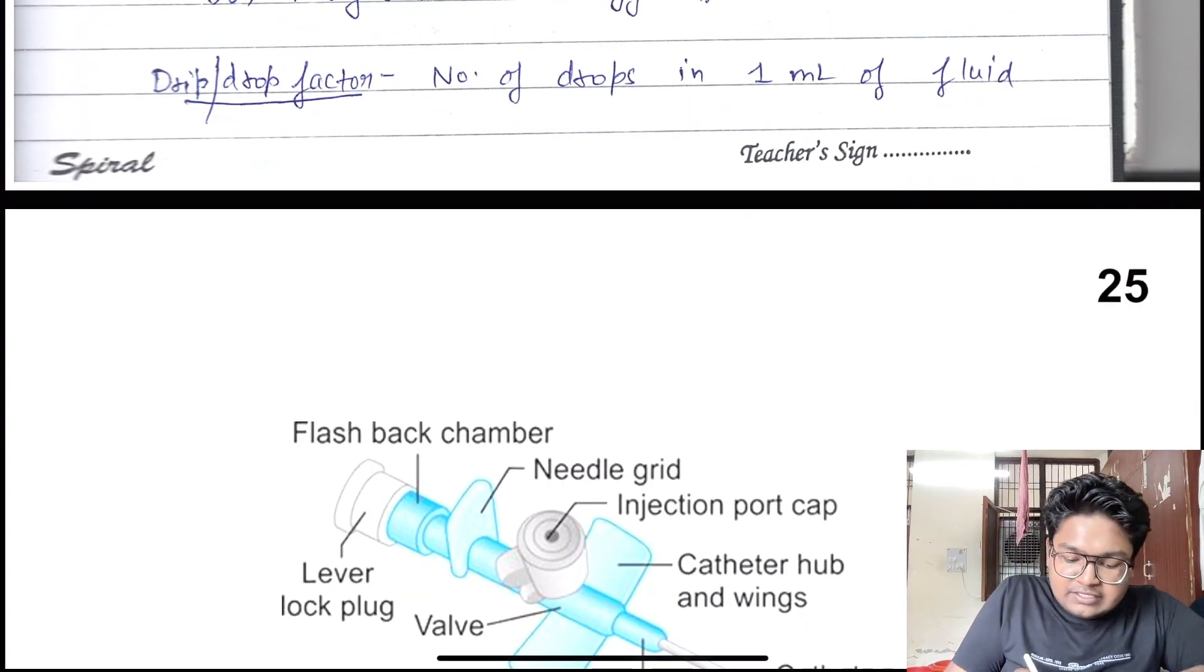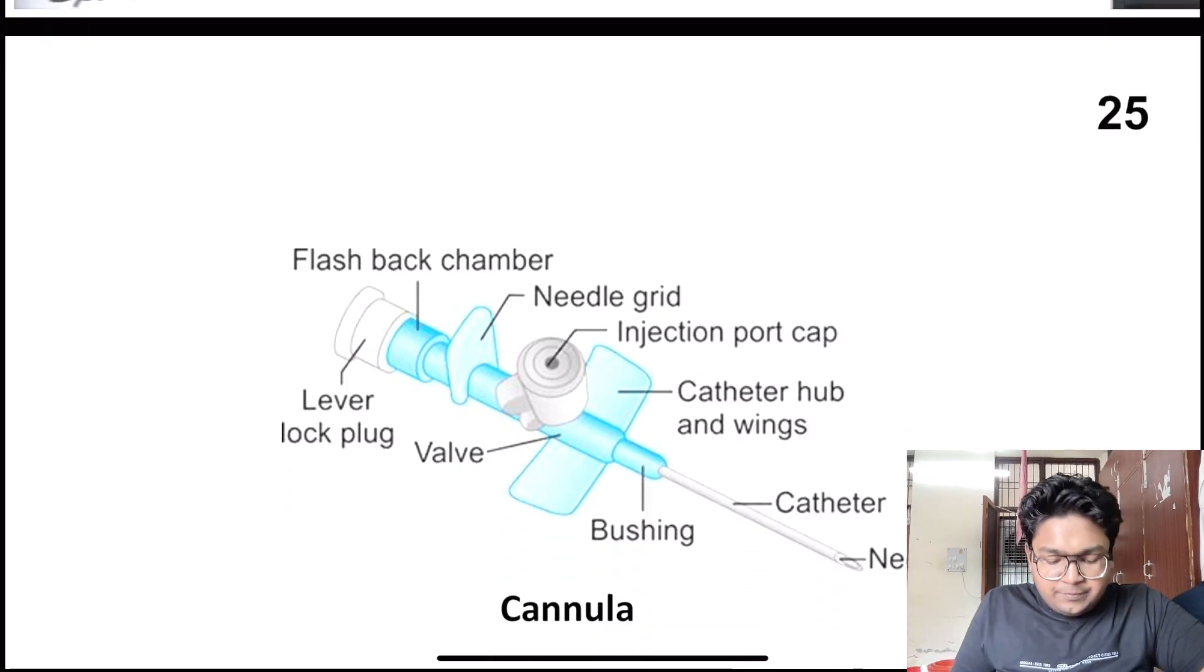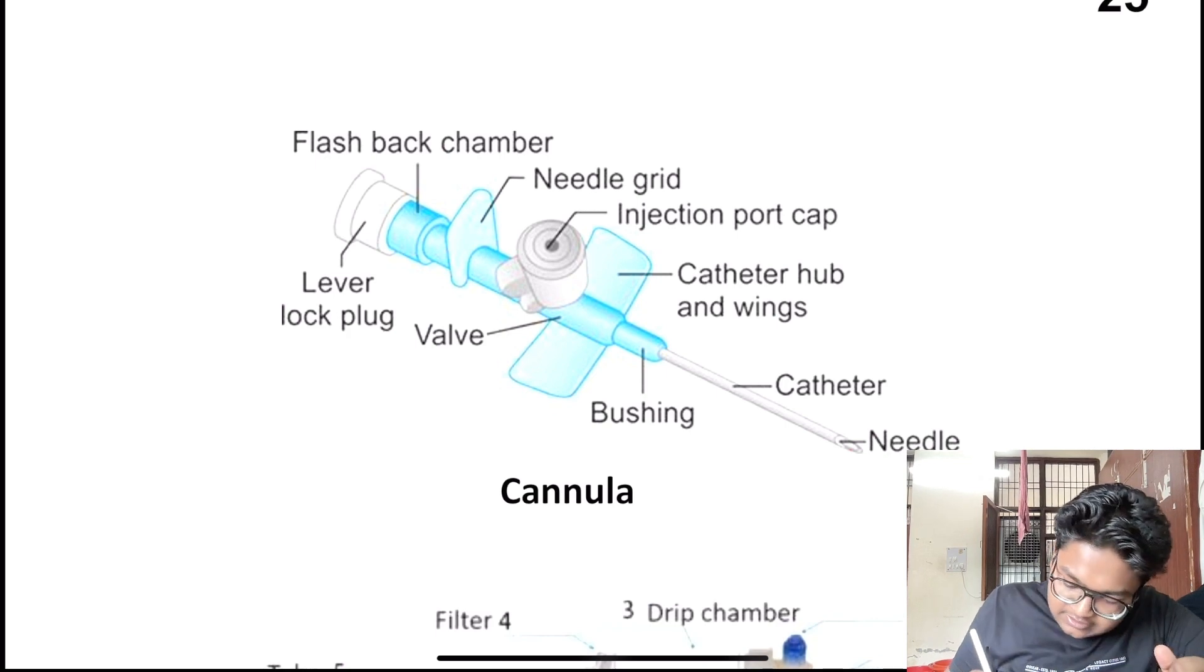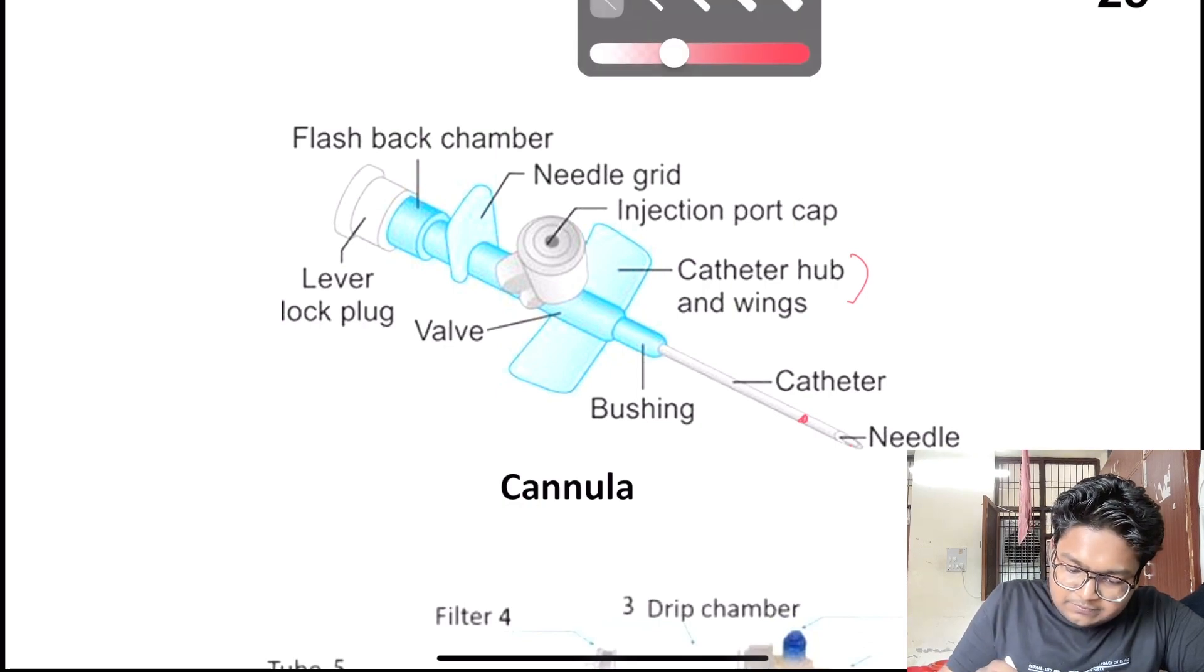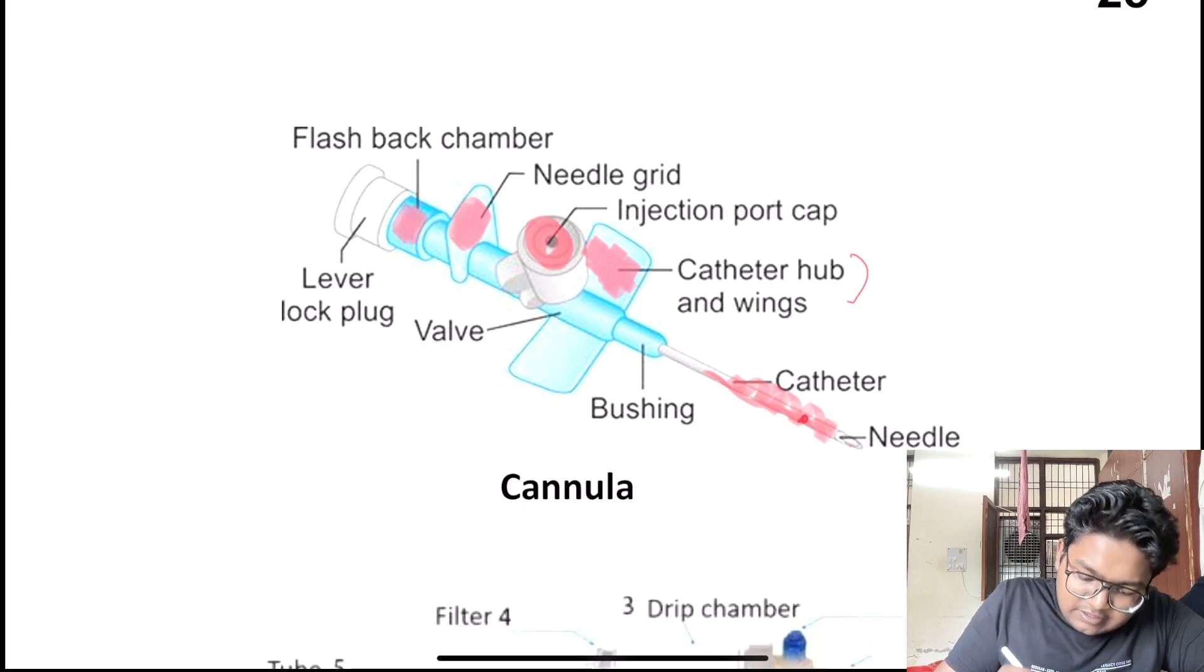What is drip factor and drip drop rate? The number of drops in one ml of fluid is called the drip factor. This is the cannula, this is the flashback chamber, this is the needle, this is the catheter, this is the bushing catheter. What is the importance of the flashback chamber? When you insert the needle, a blood drop appears to confirm puncture.